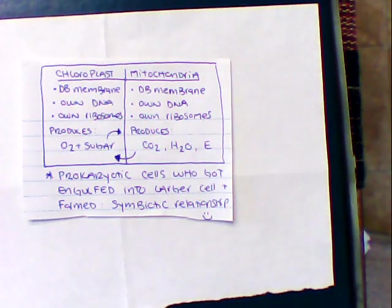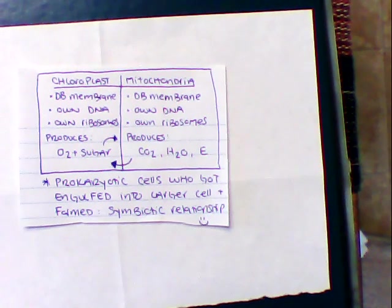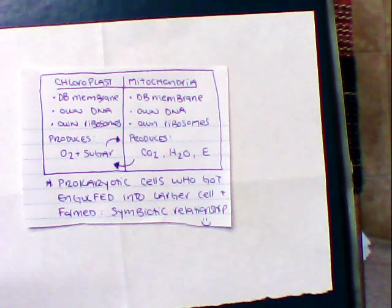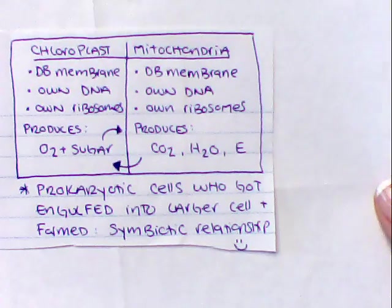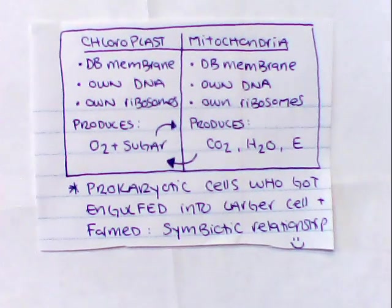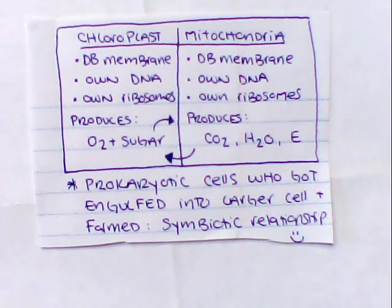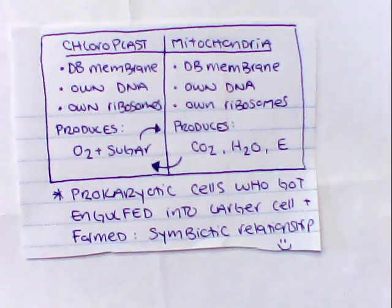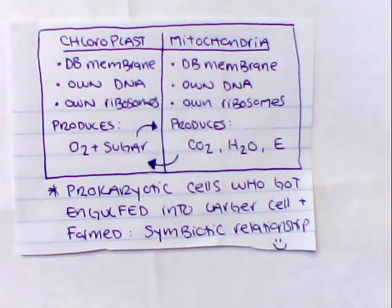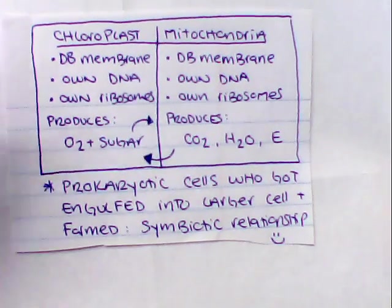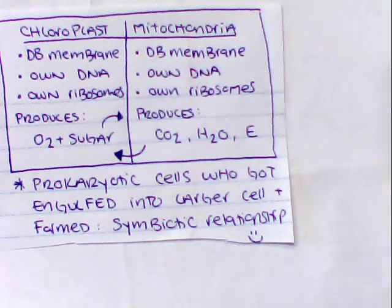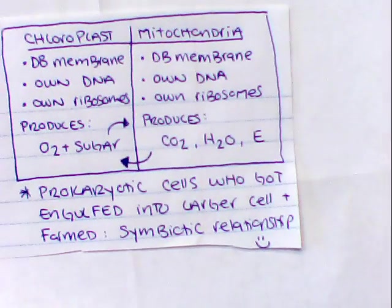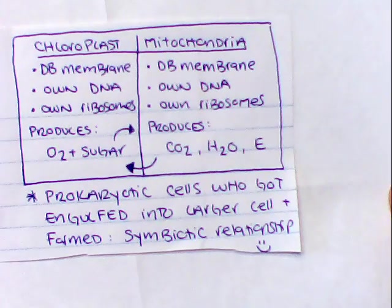One thing I want to talk about really quickly is the similarities and differences between the chloroplast and the mitochondria. The chloroplast I want to emphasize used to live by itself, as well as the mitochondria. They both have a double membrane, they both have their own DNA and their own ribosomes. The chloroplast makes oxygen and sugar, whereas the mitochondria produces water and CO2. Ironically, this is what each other needs.